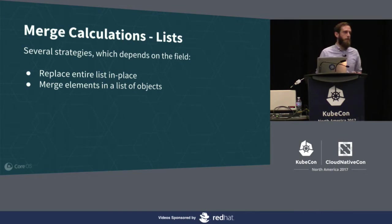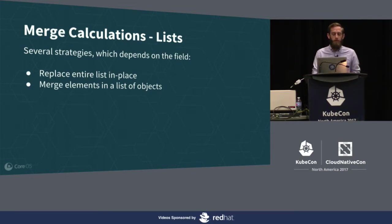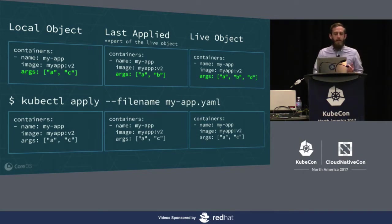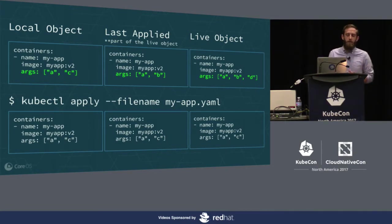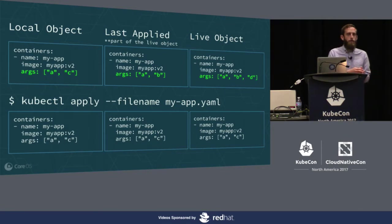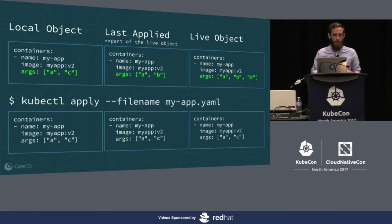Two strategies for lists: one is the entire list gets replaced wholesale, and another is that you can merge the elements of a list of objects. For a list of primitive values - like args passed to a container - all three states are slightly different: local says args should be A and C, the live object has A, B, and D, and last applied was A and B. When we run kubectl apply, it takes our desired state and just replaces args wholesale - there is no merging. It's not mixing live state with local; it just replaces completely.